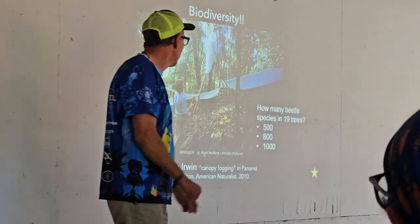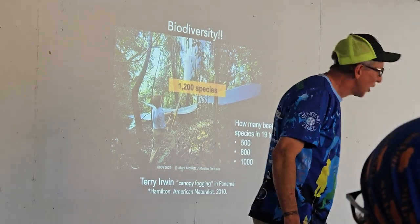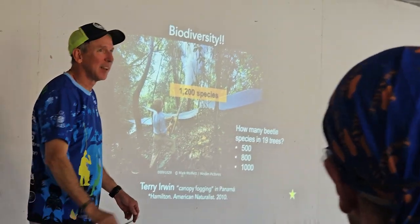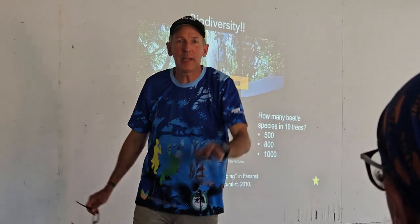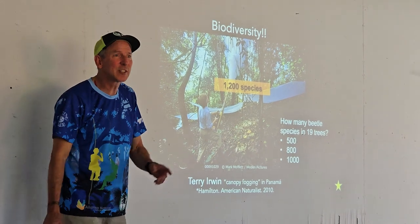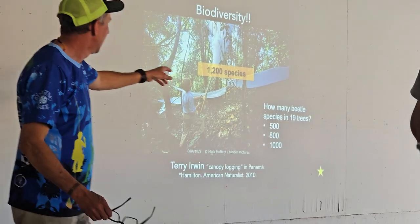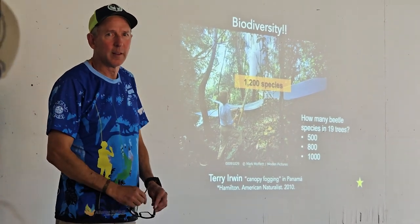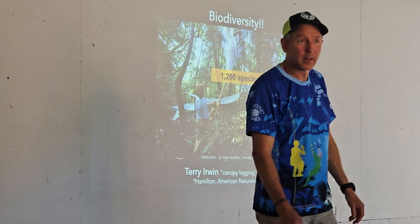How many beetles were on those 19 trees of the same species? 1,200 species — just beetles. We're not talking about ants, spiders, crickets, grasshoppers, cicadas, or anything else. Just beetles. The fog kills them when they fall on the sheets; then he puts them in jars of alcohol, takes them to the Smithsonian, and catalogs all of them. It took a while. That is biodiversity.